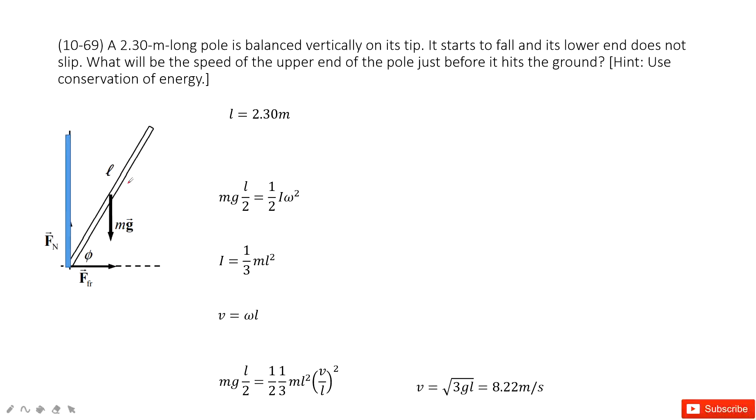And then it just falls down. We need to find the speed of the upper end of this pole just before it hits the ground. So that means we need to find the velocity for this end.